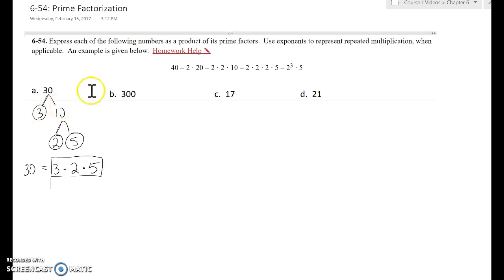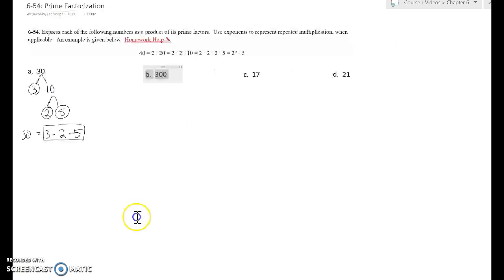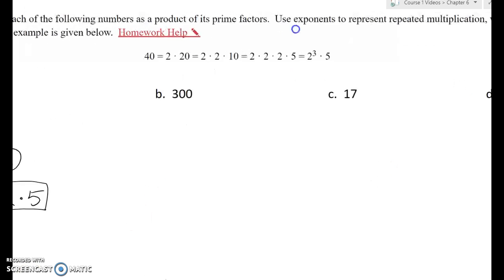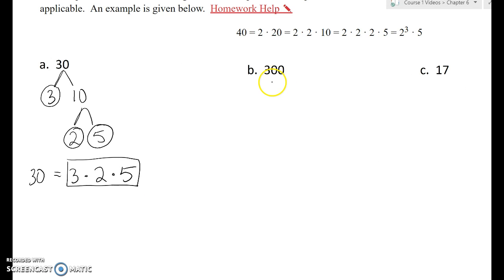Now I have a feeling I'm going to need to move these guys over, so hold on a second. All right, so let's do the same thing for 300 here. Let's say that 3 times 100 will make 300. 3 is a prime factor. 100 is the product of 10 times 10. Neither of those are prime.